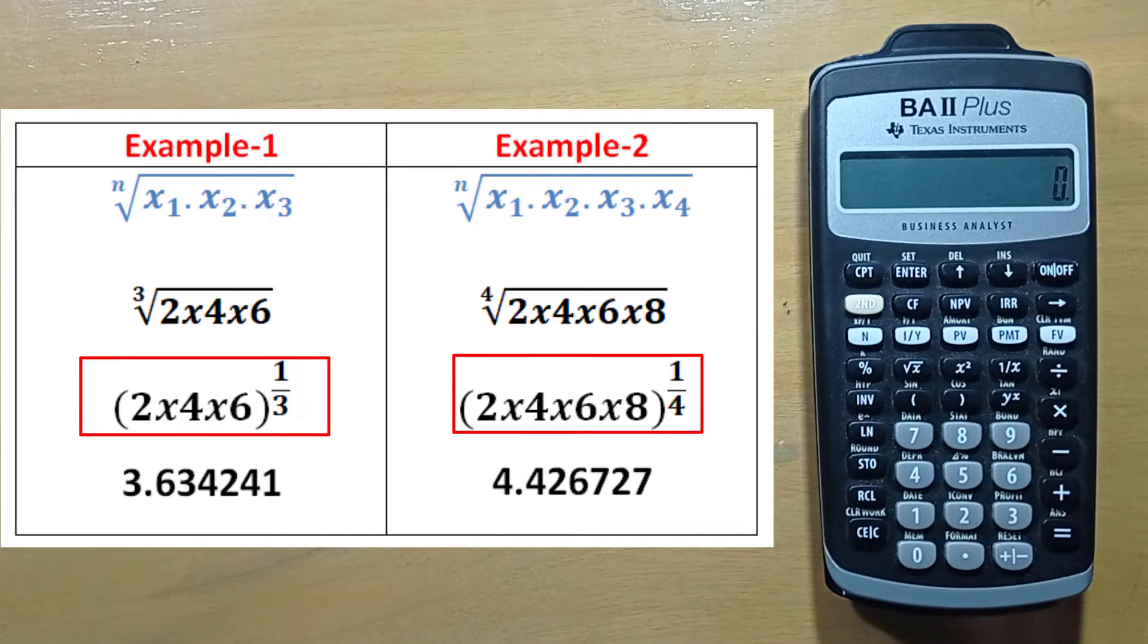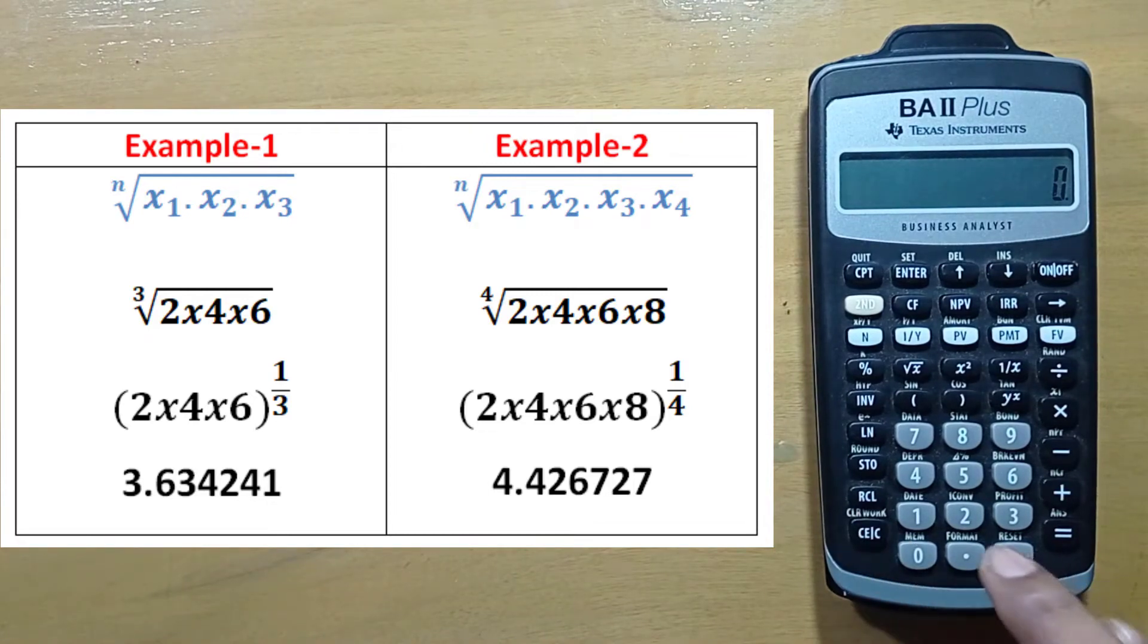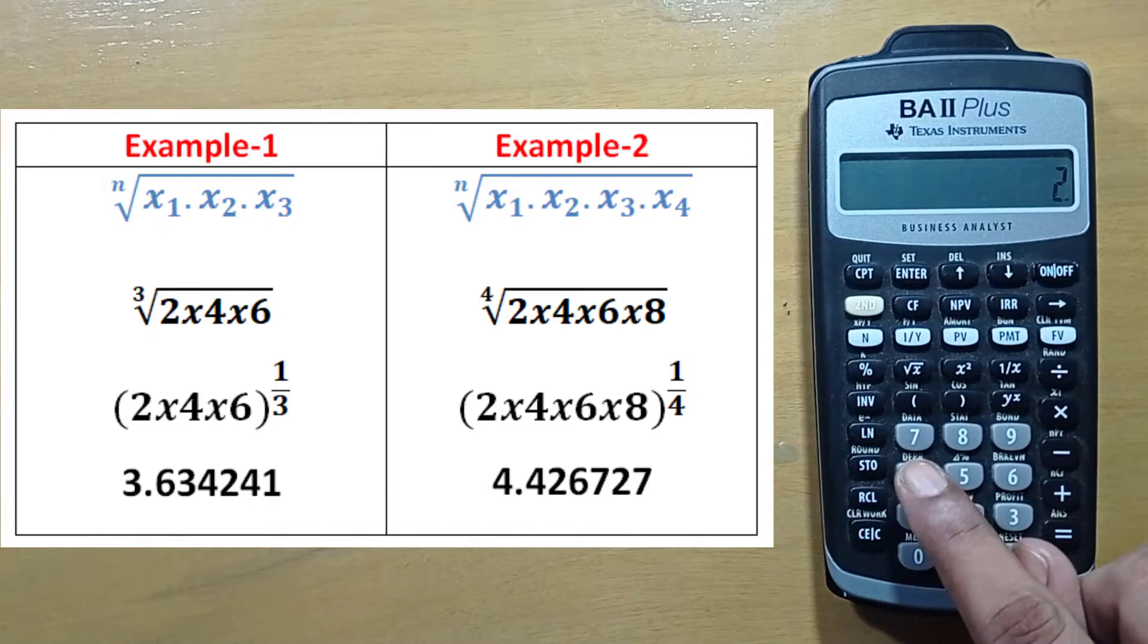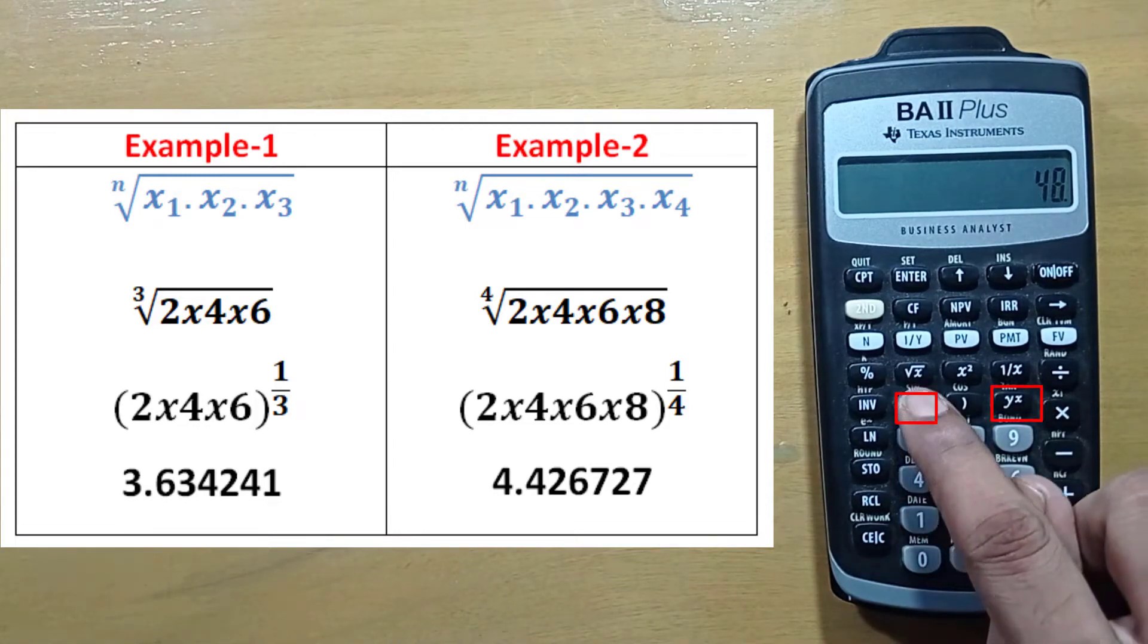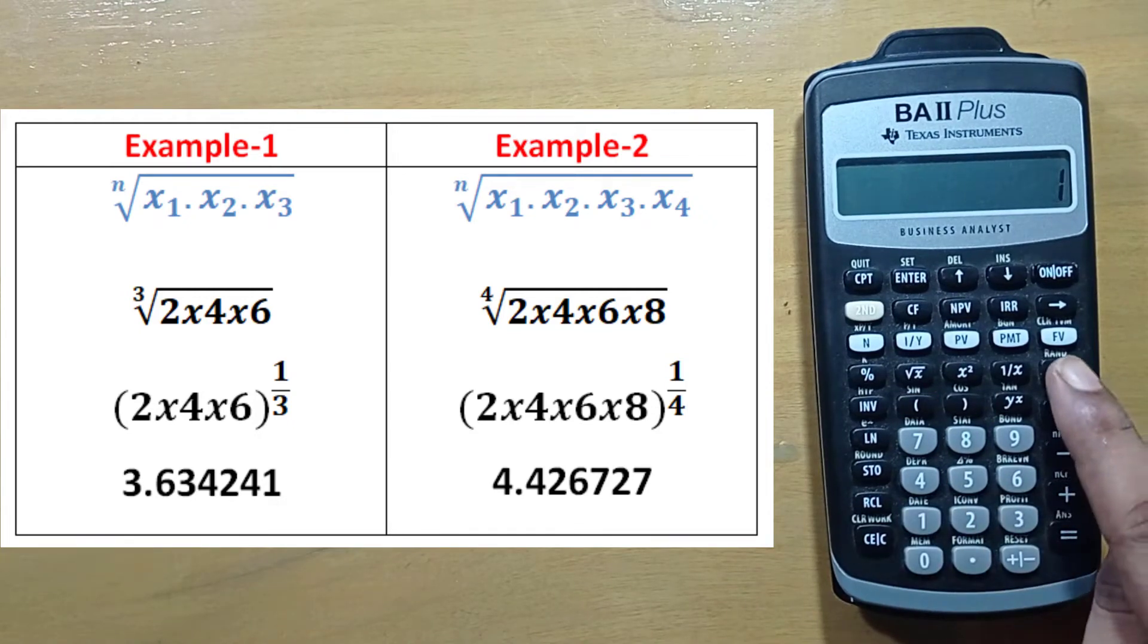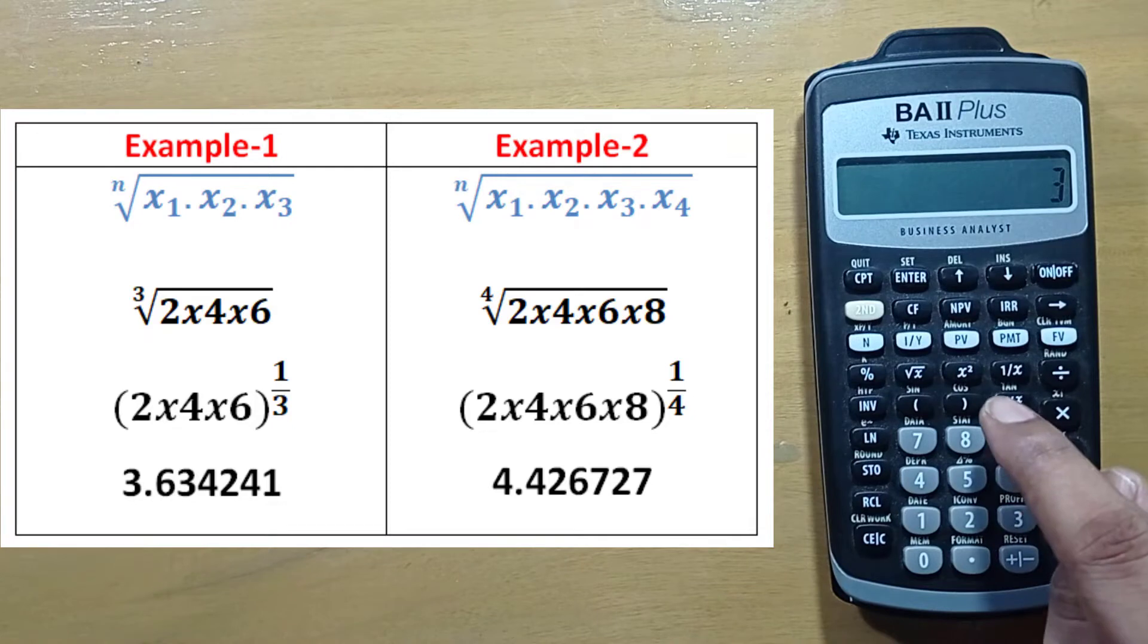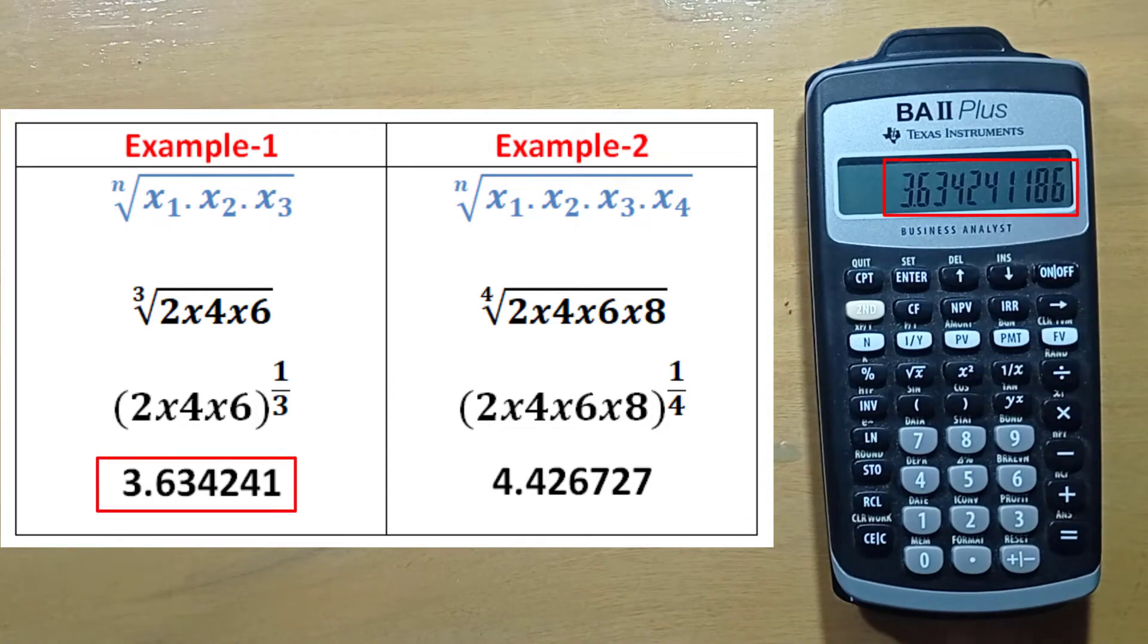It can be calculated in two ways. First we can multiply 2 into 4 into 6, then press this y to the power x sign, first bracket, 1 divided by 3, close bracket, then press this equal sign. So we have our result.